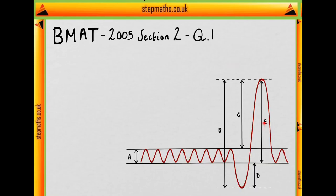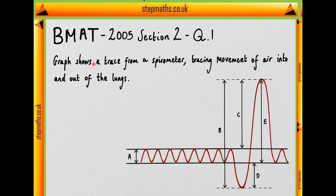In question 1 we're given the following diagram here and we're told this represents a graph showing a trace from a spirometer which traces the movement of air into and out of the lungs.